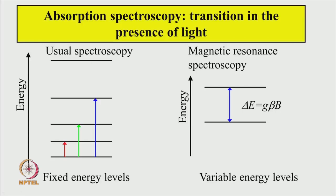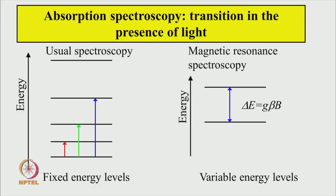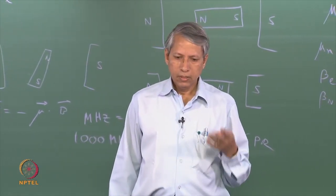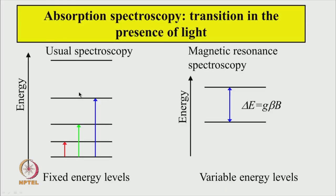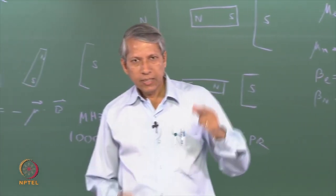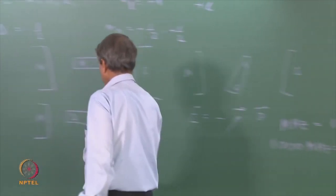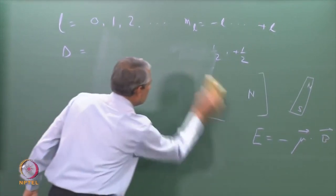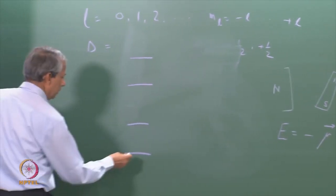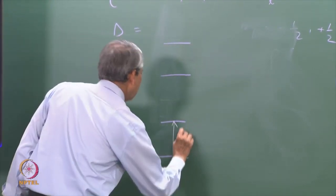Having obtained the splitting of energy levels, we can now look at the spectroscopy and how it is done. Typical absorption spectroscopy involves shining light and seeing where exactly the light is absorbed. In conventional spectroscopy, the energy levels are fixed properties of the atoms or molecules. Here, however, the energy level gap depends on the external magnetic field. So delta E equals G * beta * B, where B is the external magnetic field — changing B changes the gap.